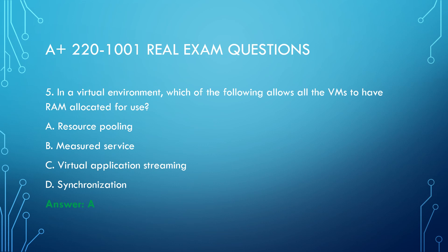Question 5. A security team is auditing a company's network logs and notices that a USB drive was previously inserted into several of the servers. Many login attempts were then successfully performed using common login information. Which of the following actions should be taken to close the vulnerability? Select two. A. Disable guest account. B. Remove admin permissions. C. Modify autorun settings. D. Change default credentials. E. Run OS security updates. F. Install a software firewall. Answer: A, C.